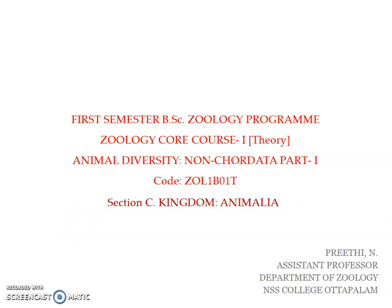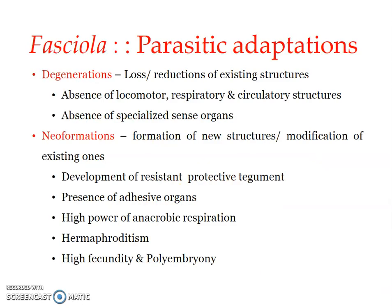Welcome back. I am going to discuss the life cycle of Fasciola, the liver fluke — specifically the last aspect: parasitic adaptations depicted by liver fluke. The parasitic adaptations of liver fluke can be considered under two categories: one is degenerations, and the other is neo-formation.